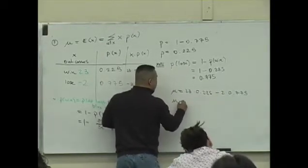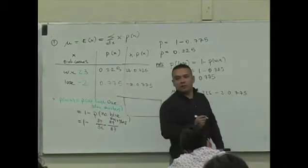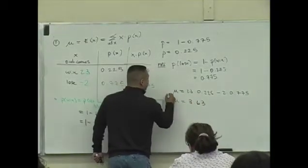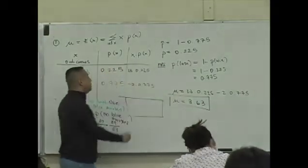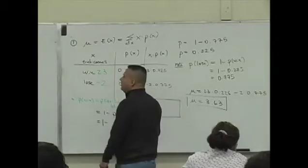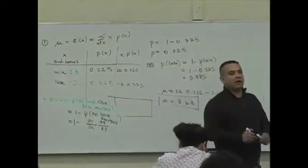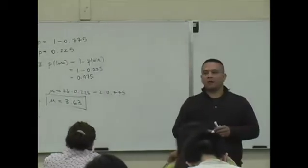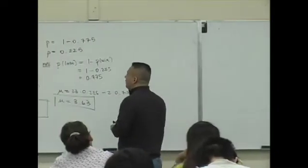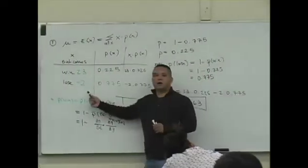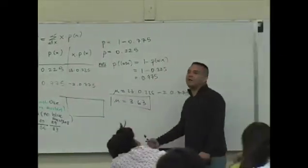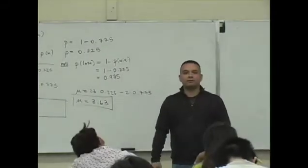And what do you get as an answer? What's mu? What is the expected value? 3.63. Is that positive or is that negative? It's a positive value. So here's the deal again, right? You create the marble game, at least one blue marble. You create this game, right? At home or in your casino.